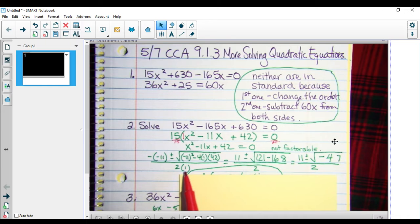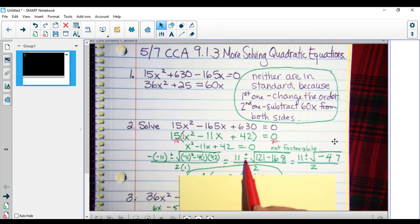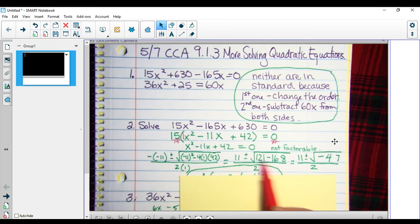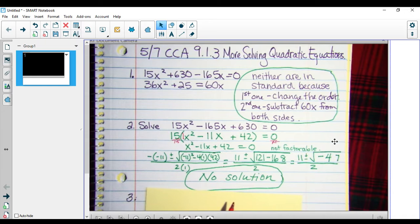Go ahead and start simplifying. The opposite of negative 11 is 11 plus or minus the square root of negative 11 squared is 121 minus 4 times 1 times 42 is negative 168, all over 2 times 1 is 2. And I can see right here I'm going to have a negative number. I can't take the square root of a negative, so I have no solution.